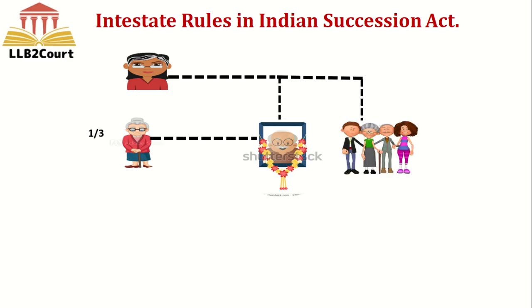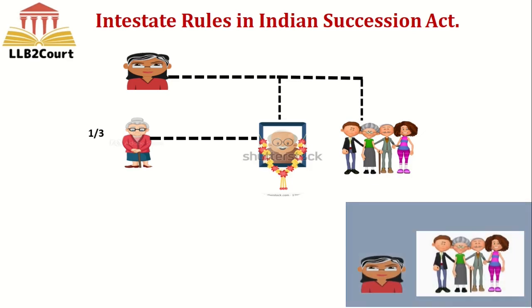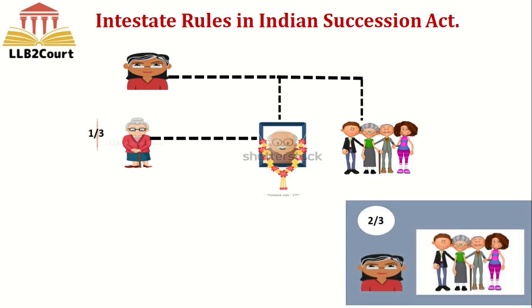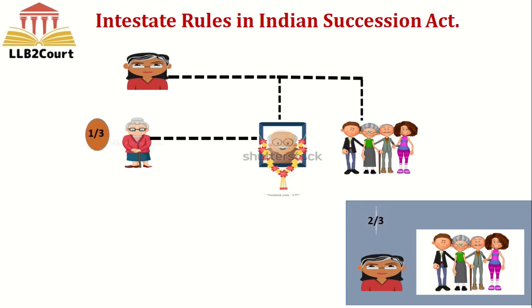Suppose he is survived by his mother and brothers and sisters — that 2/3 share has to be divided equally between the mother and his brothers and sisters. For example, if there is a mother, 2 brothers, and 2 sisters, that is 5 people total, so the 2/3 is divided by 5, giving each person 2/15.